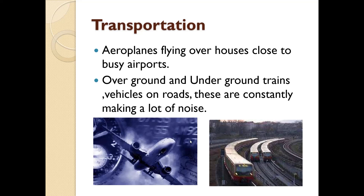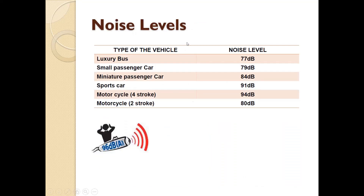Then transportation: airplanes flying over houses close to busy airports disturb occupants. Overground and underground trains and vehicles on roads are constantly making a lot of noise. Looking at noise levels: a luxury bus produces 77 decibels, small passenger car 79, miniature passenger car 84, sports car 91, four-stroke motorcycle 94, and two-stroke motorcycle 80 decibels.